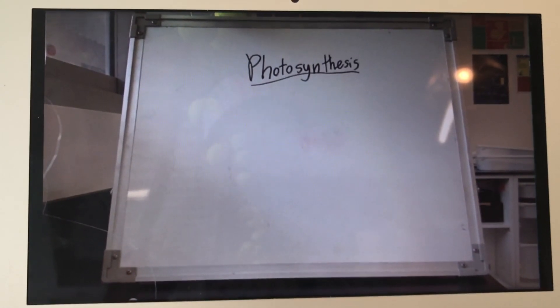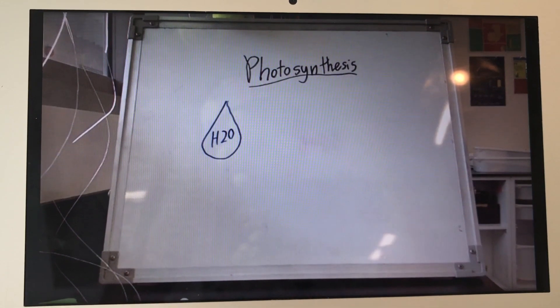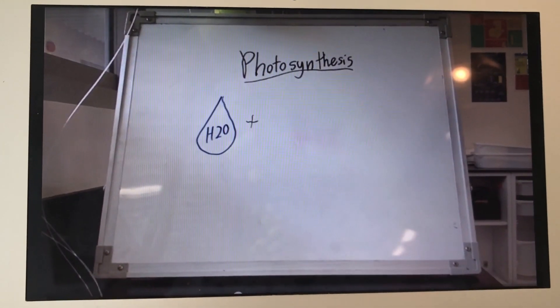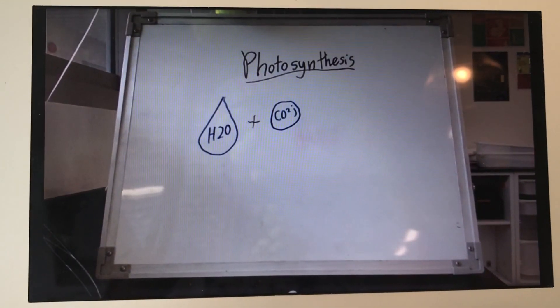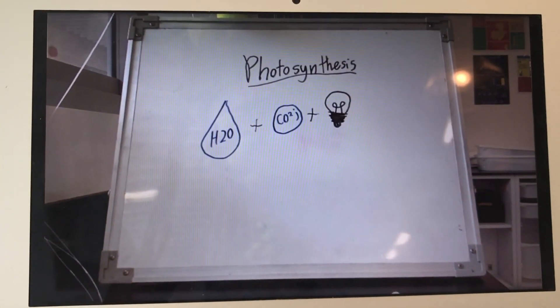Here is the process of photosynthesis and its byproducts. It starts with water, or H2O, and carbon dioxide, or CO2, and sunlight, the energy from the sun.